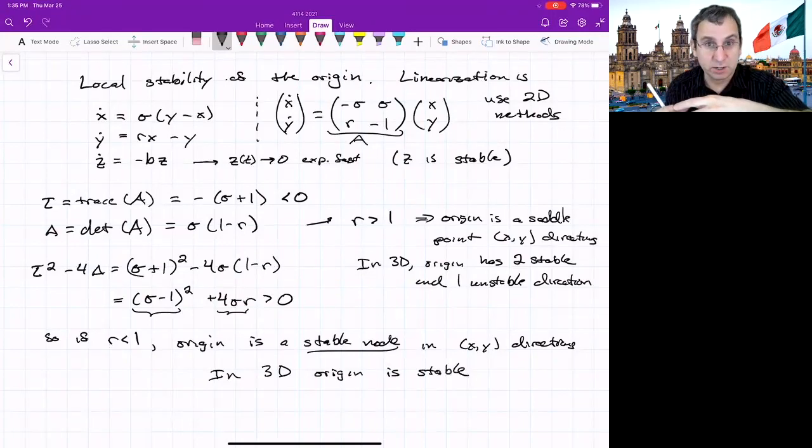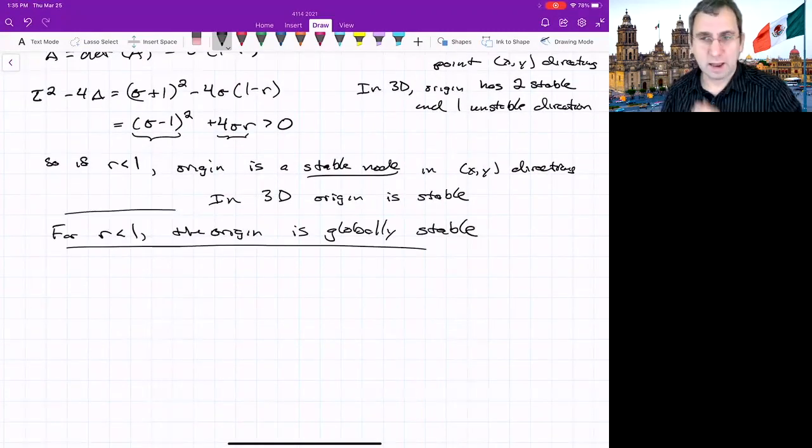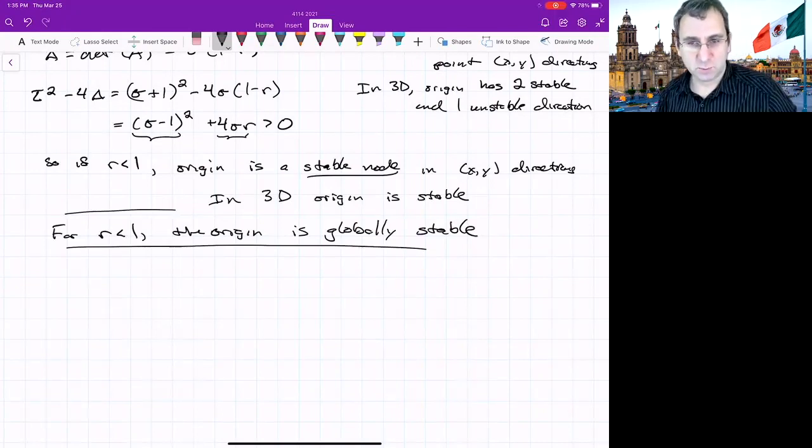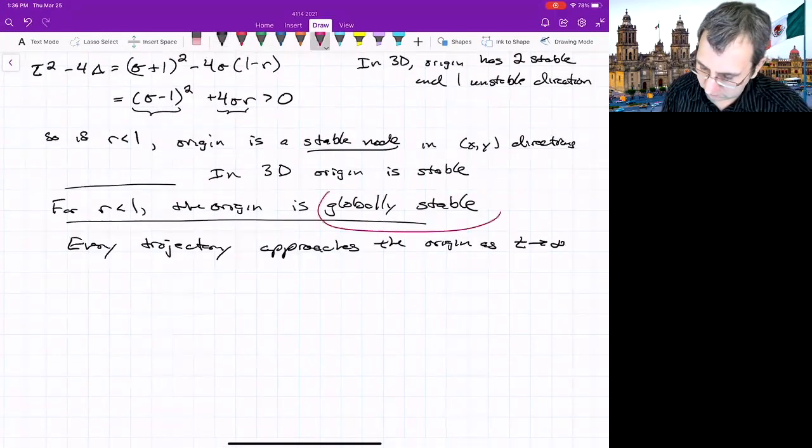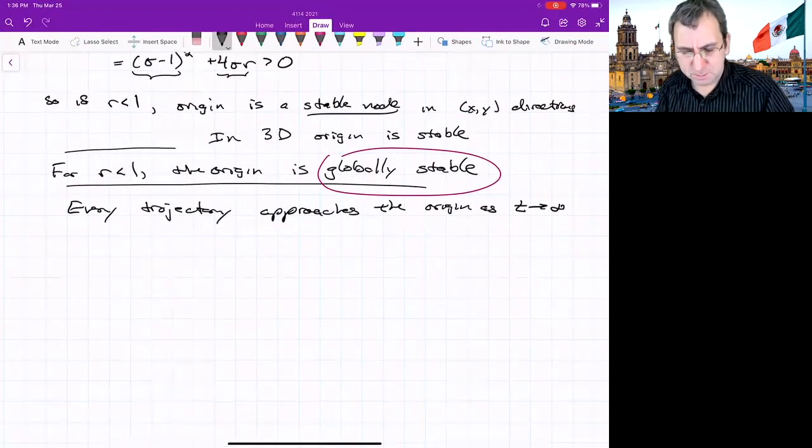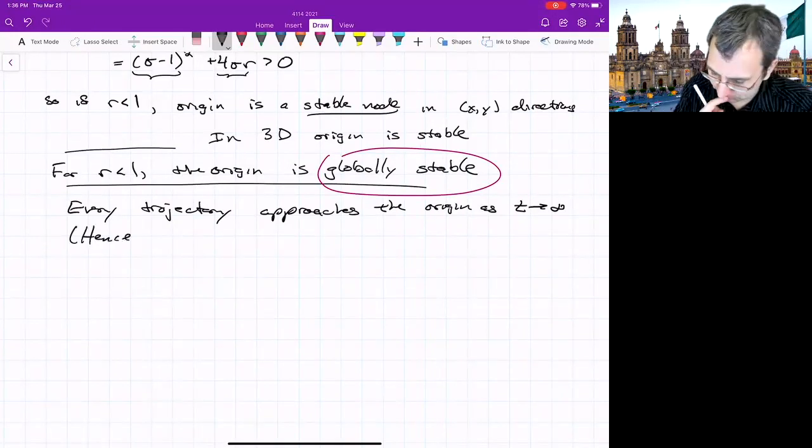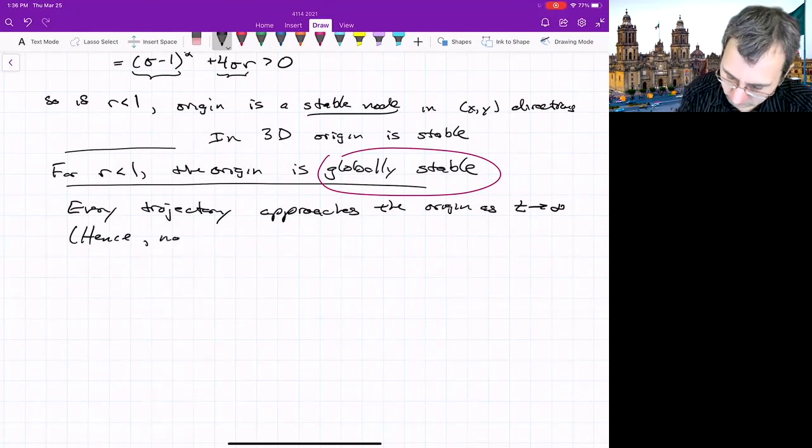And in fact, the origin is globally stable. Every trajectory approaches the origin as time goes to infinity. That's what we mean by globally stable. We'll show this. We haven't yet shown it just by showing that it's locally stable. But we can show that it is globally stable. This is for r less than 1. So the Rayleigh number less than 1, hence no limit cycles or strange attractors.